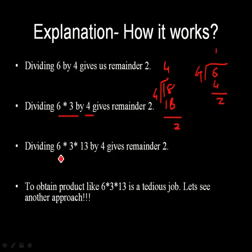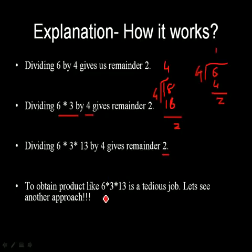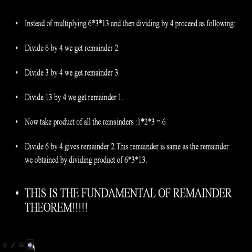Further, on dividing 6 into 3 into 13 by 4, you will get 2 as a remainder. But to obtain the product of terms like 6 into 3 into 13 is really a tiresome job. So we shall find some other approach. Let us move ahead and find it out. Instead of multiplying 6 into 3 into 13 and then dividing it by 4, we shall follow some other route.